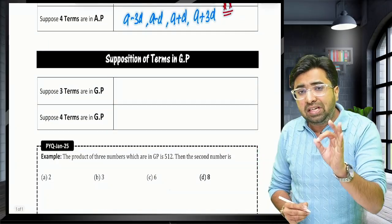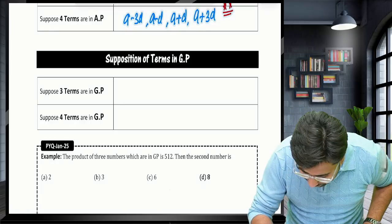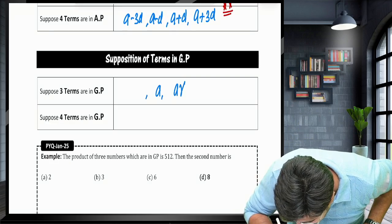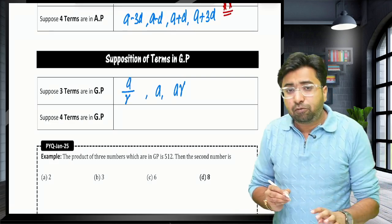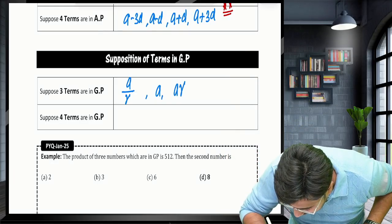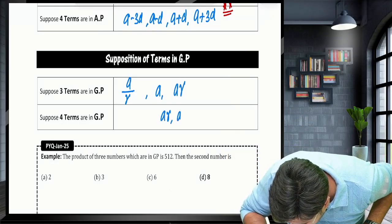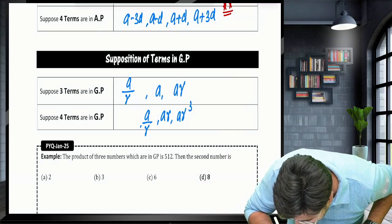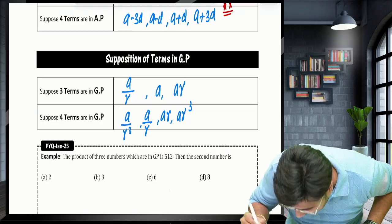What if we have to assume 3 terms in GP? Assume A by R, A, AR. And if you have to assume 4 terms, assume A by R cube, A by R, AR, AR cube. Why? Let's have a question.